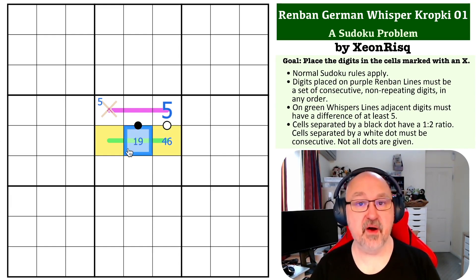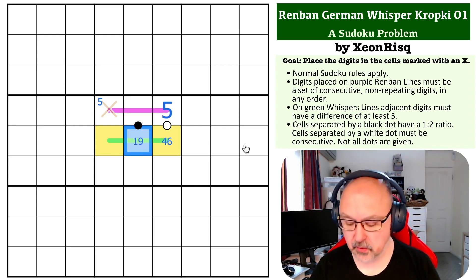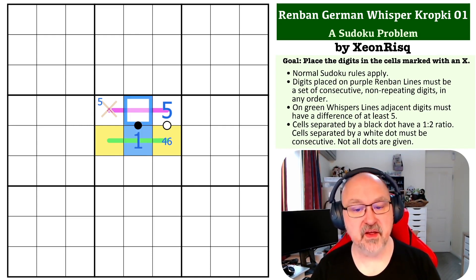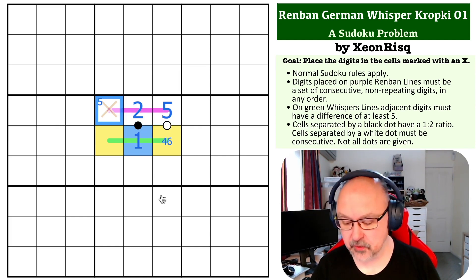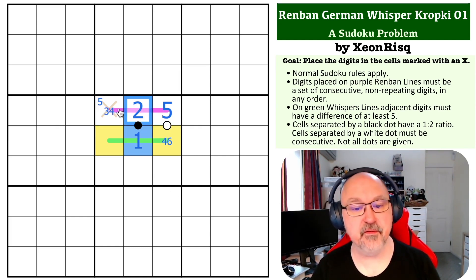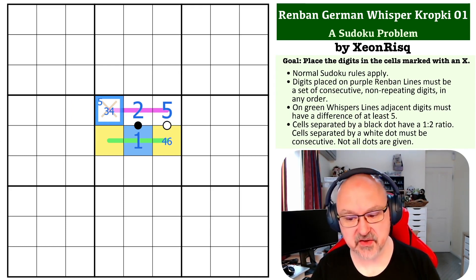You can't put nine on a black dot. There's no half or double. So this has to be a one, and the only thing that is in a one to two relationship with one is two. Now we've got two and five on a Renban line, and this cell would have to simultaneously be three or four and four to make this a set of consecutive digits, and we can't do that.